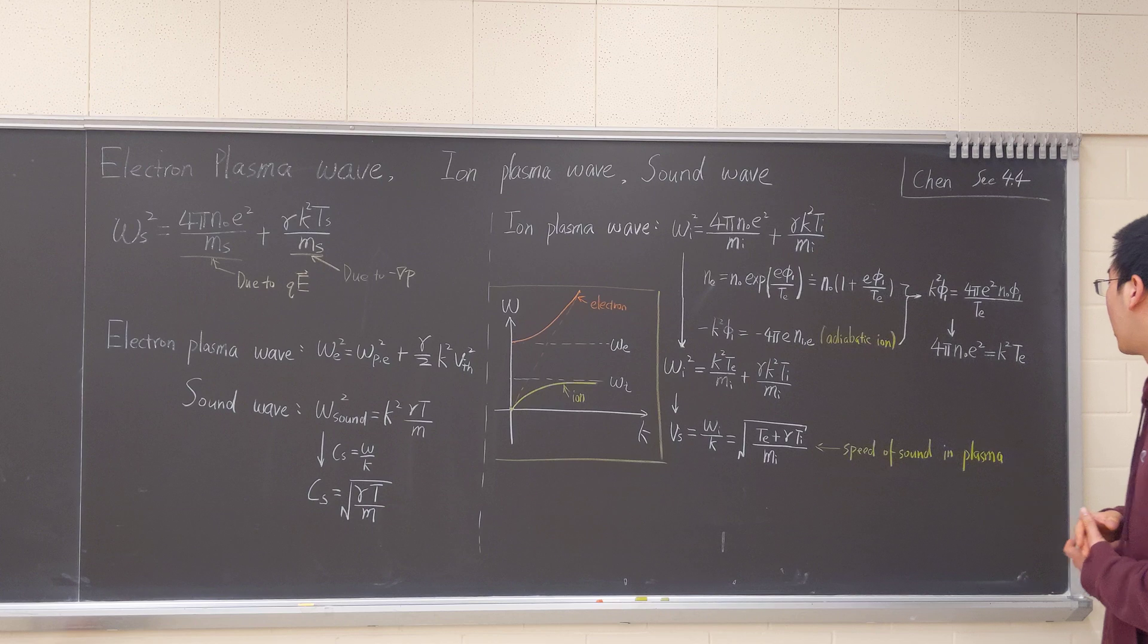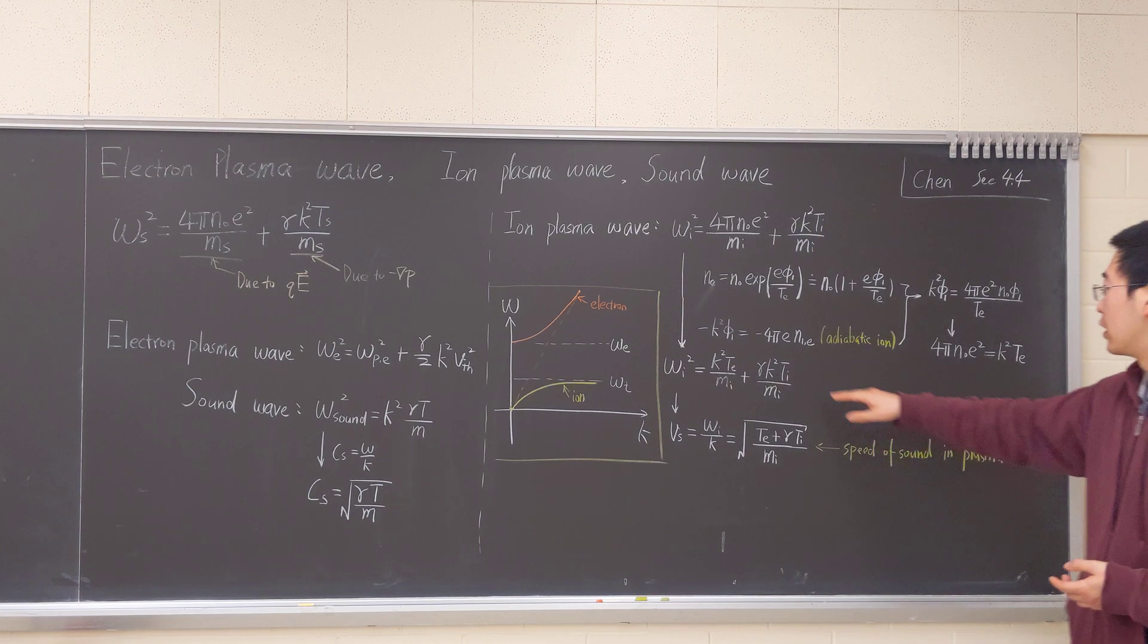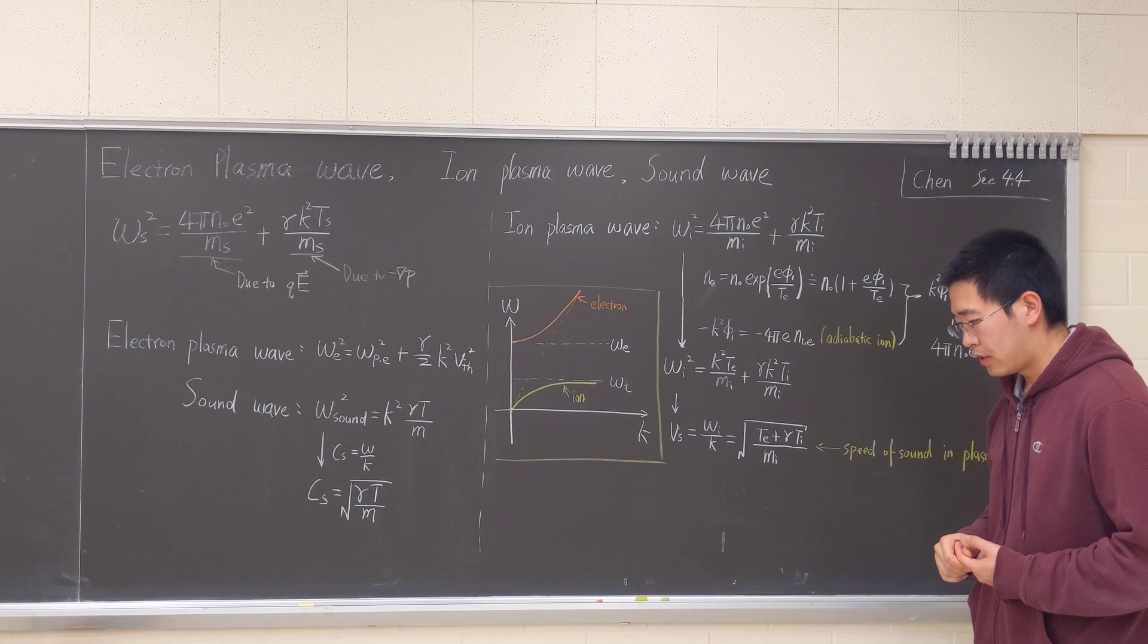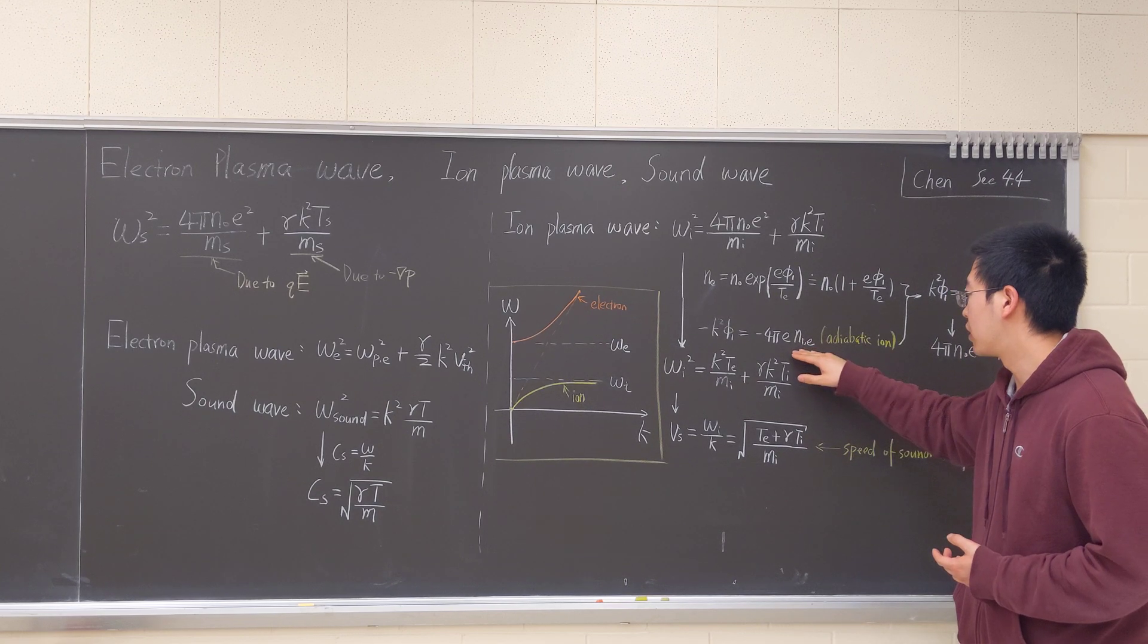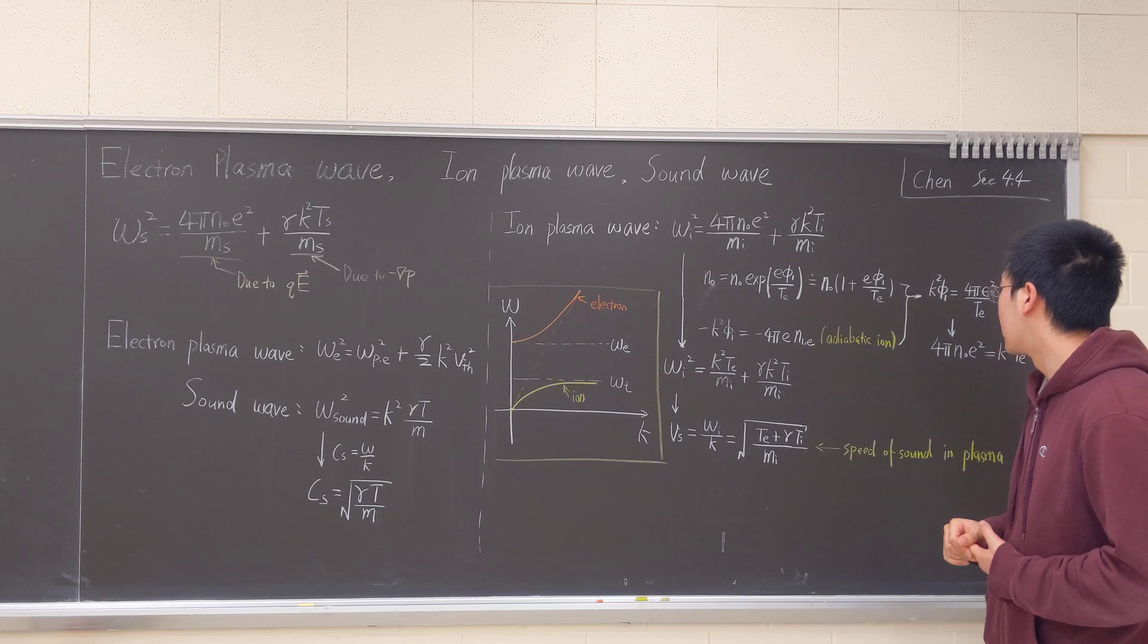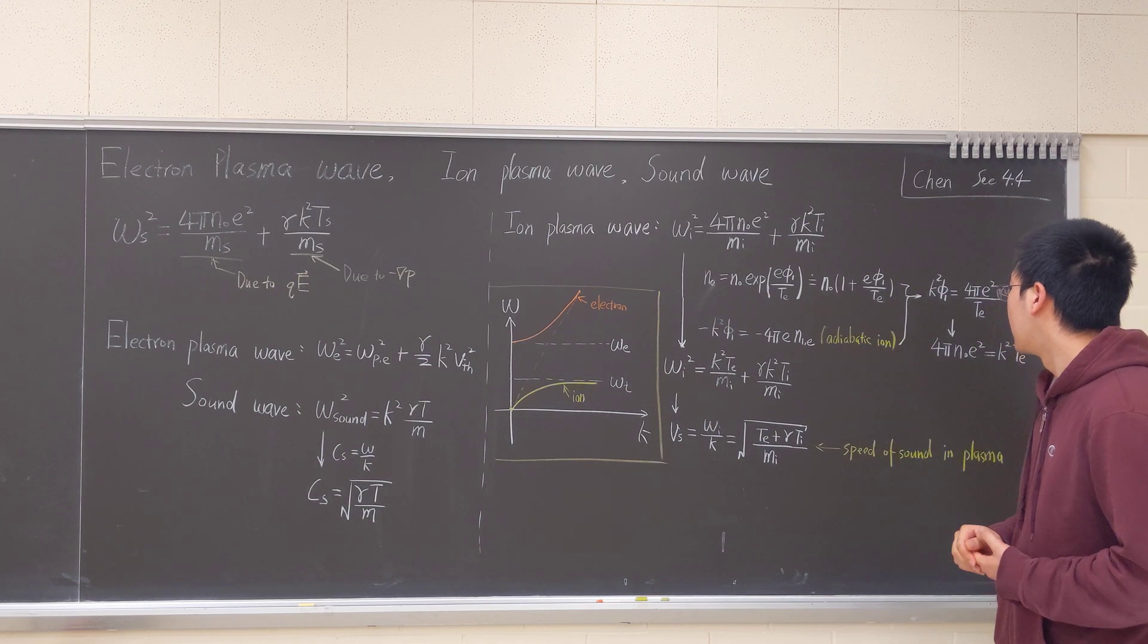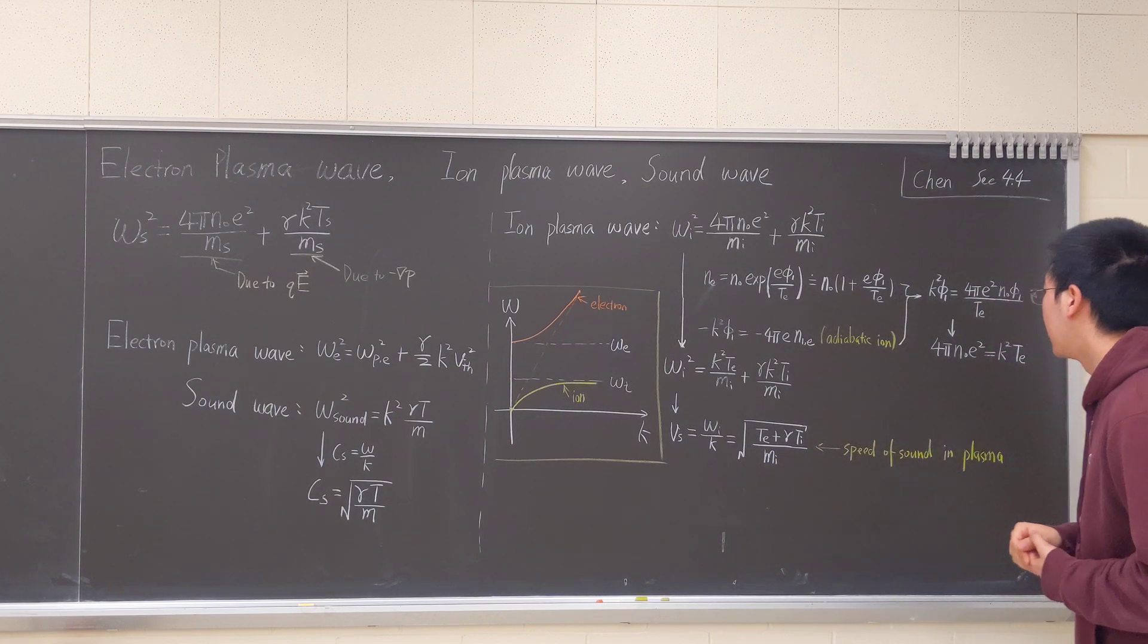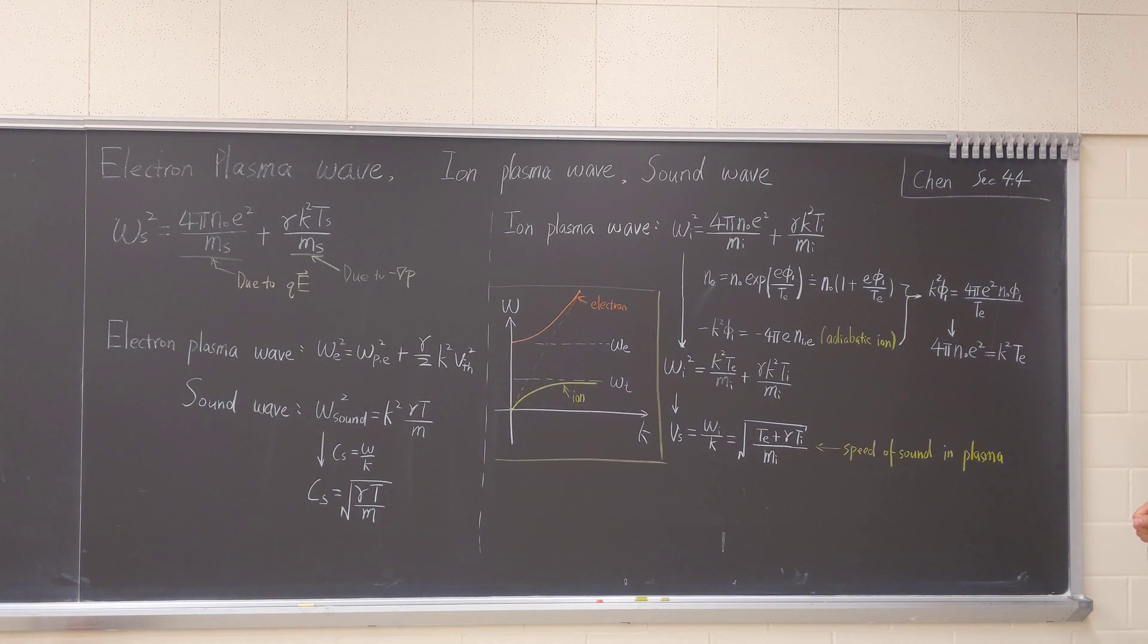So this N-0 is N-1. And this is our Poisson's equation. Because we assume that ion is adiabatic, then we will only have the N-I, N-1 E.